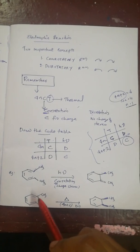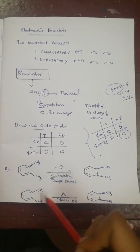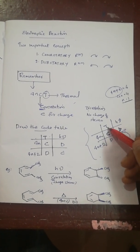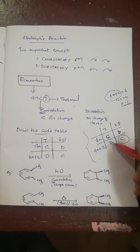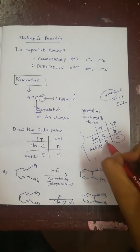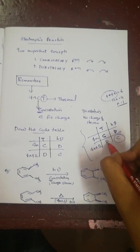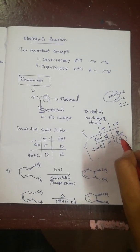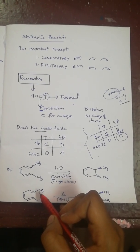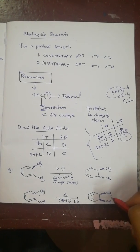Now if you see the same reaction under thermal conditions: 4n+2 pi electrons with thermal gives disrotatory — that means D, no change in stereo. You keep the stereochemistry of the product as it is. So both methyls remain in the same direction, and in the product they should also be in the same direction.